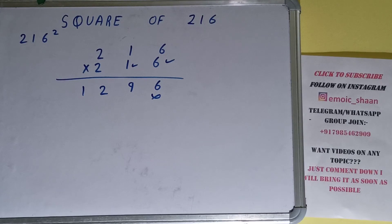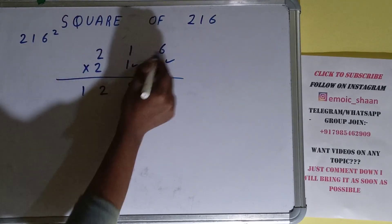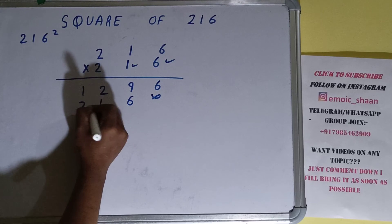Now 1 into any number is that number, so we can just copy this row down: 6, 1, 2, okay.